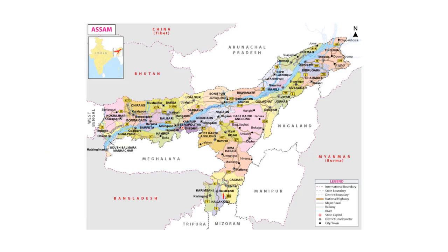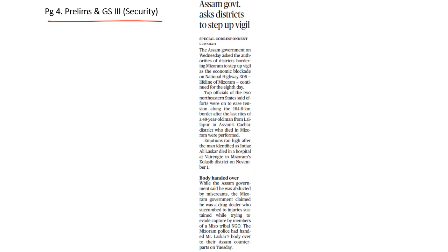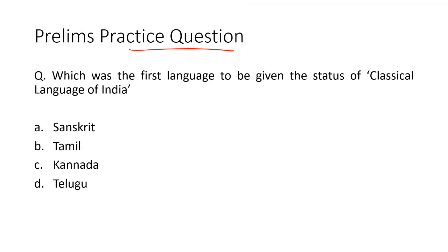Please look at this map. Here you can find National Highway 306. It basically connects Silchar in Assam with key towns in Mizoram. This highway is considered to be the lifeline of Mizoram. This highway is frequently in news because of the ongoing dispute between Assam and Mizoram over their border issue. Now let's take up the next question. Which was the first language to be given the status of classical language of India? The correct answer is option B, Tamil.